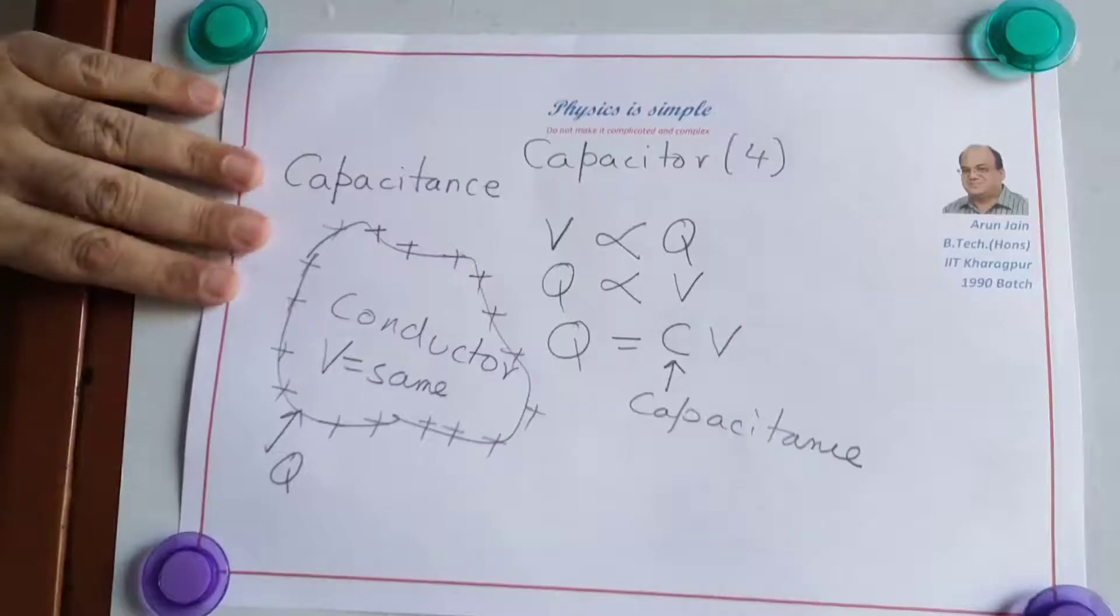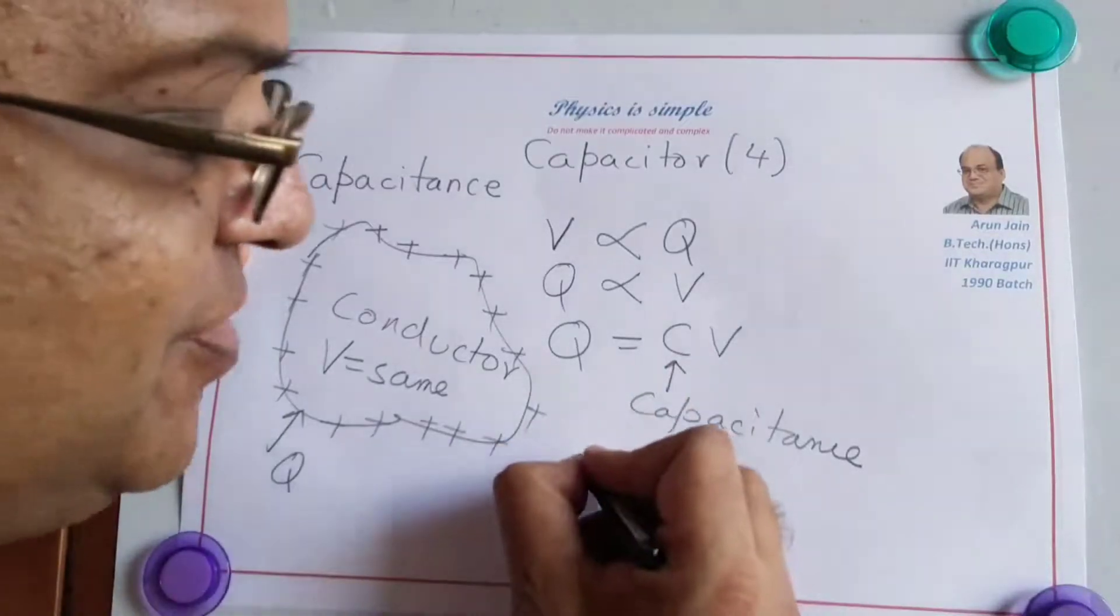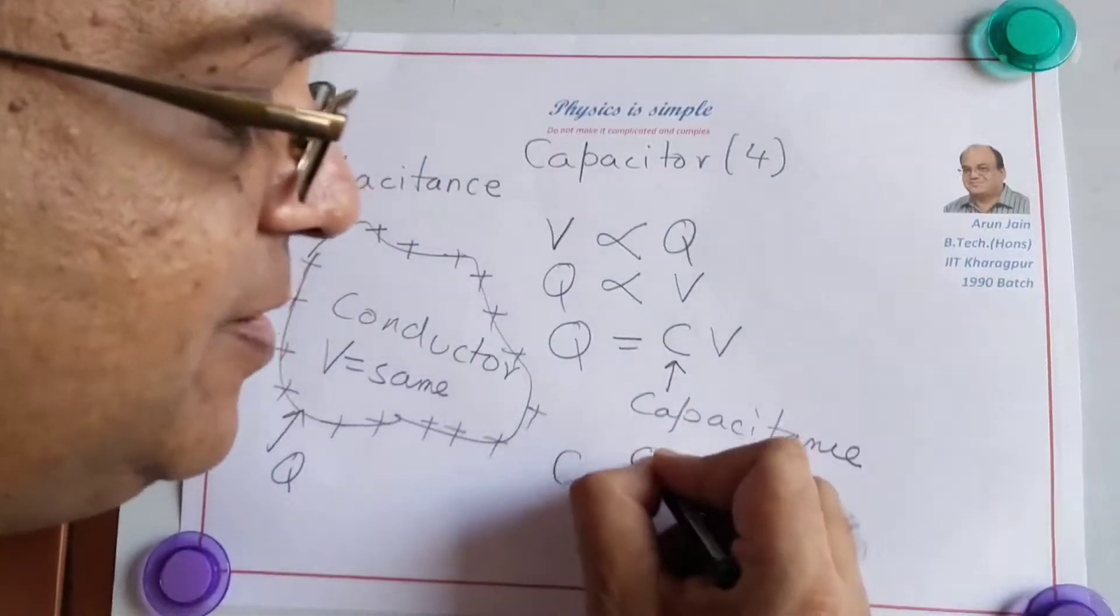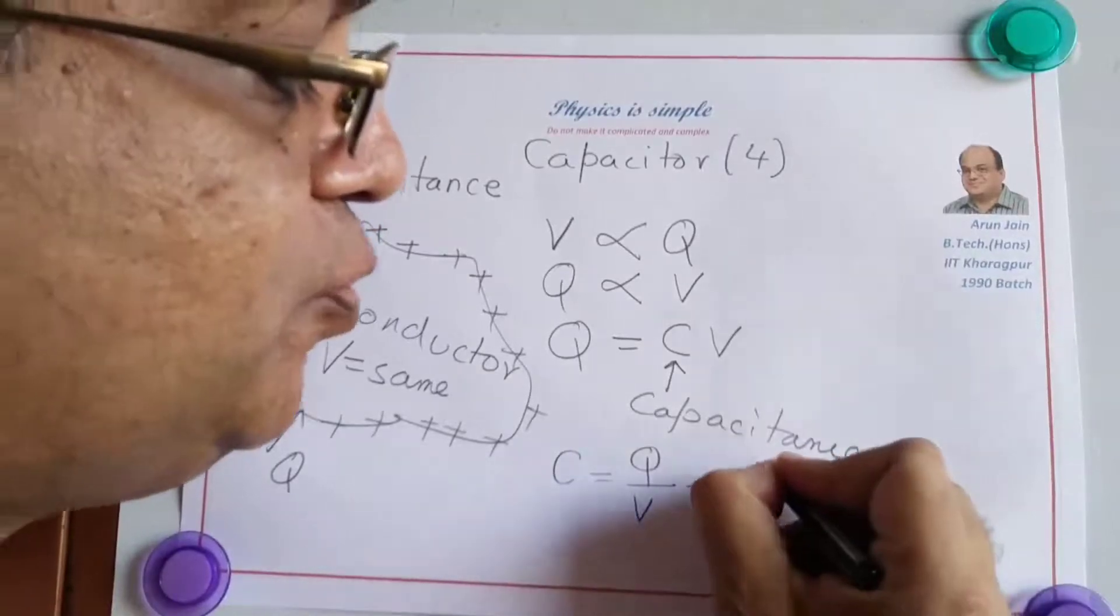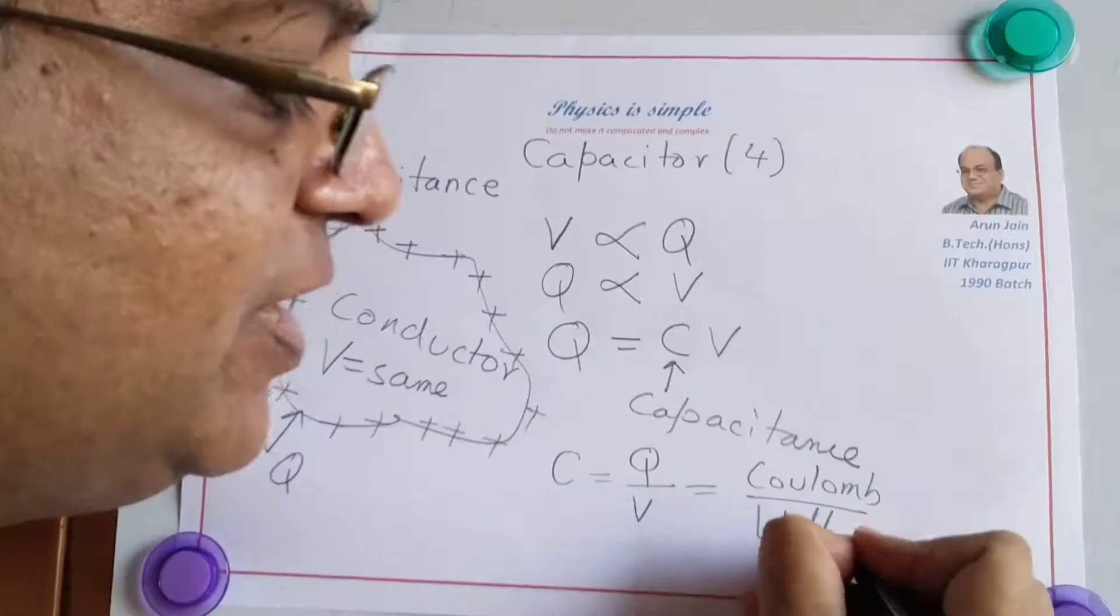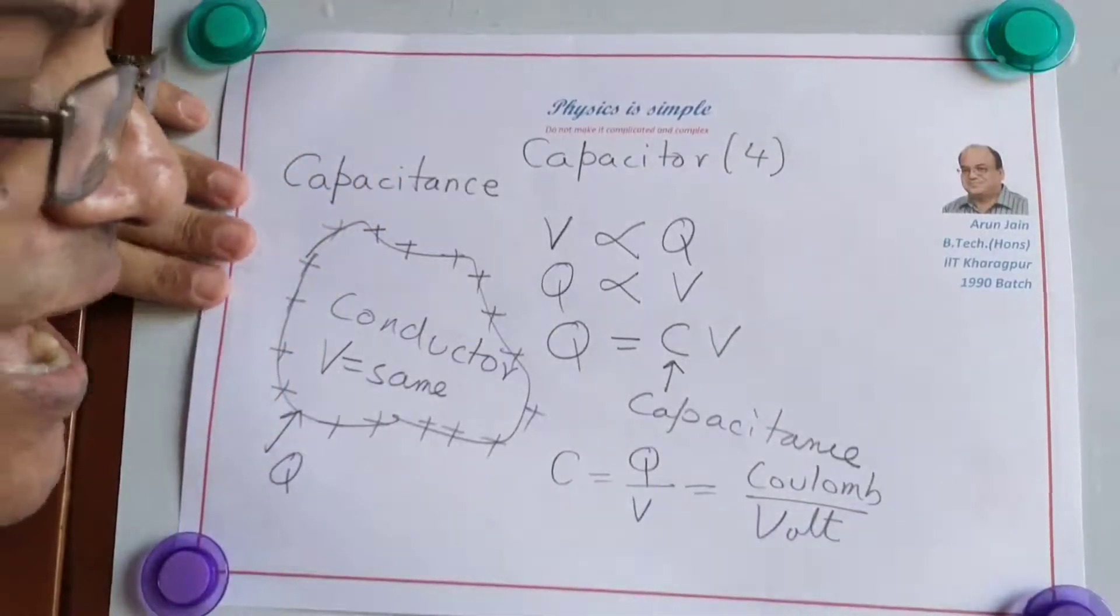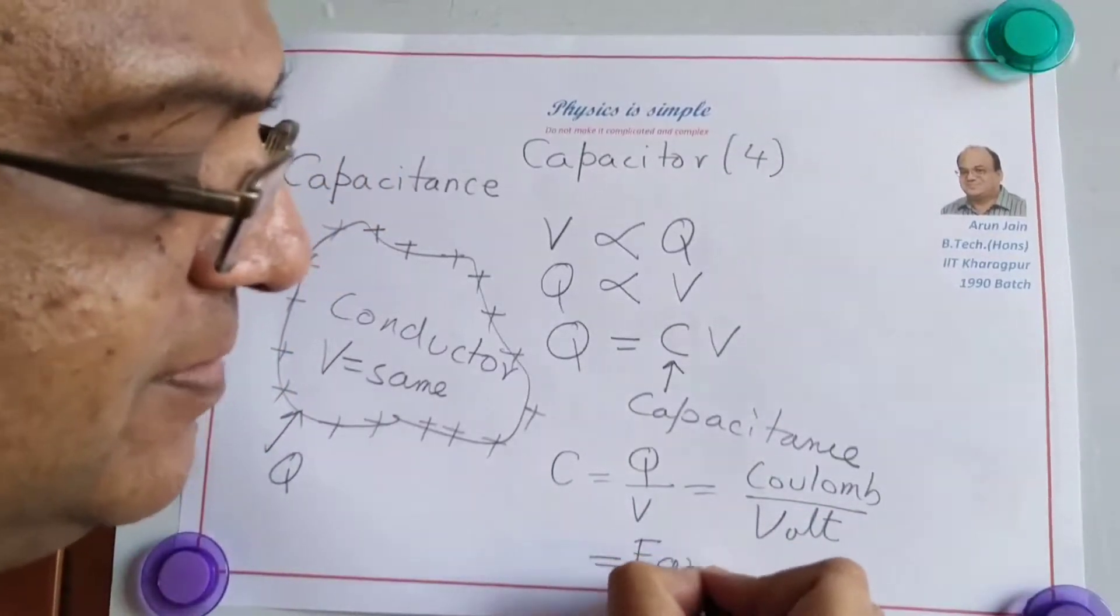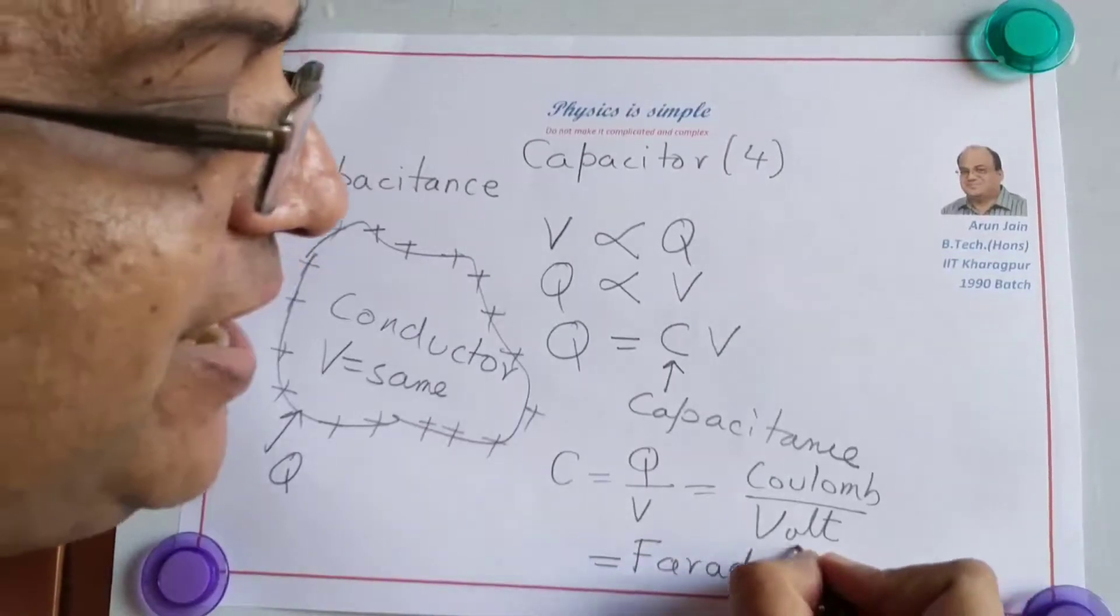Now, we can write the unit of capacitance from here. So C becomes Q by V. The unit of Q is coulomb, and the unit of V is volt. So it is coulomb by volt, and that we call Farad. Farad is named after Faraday, and that is the unit of capacitance.